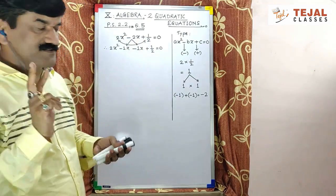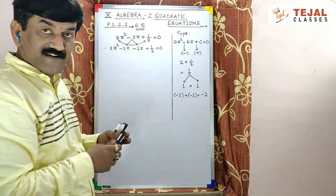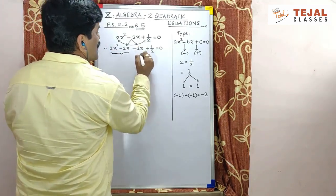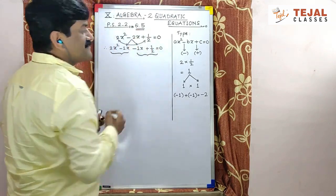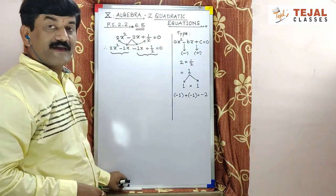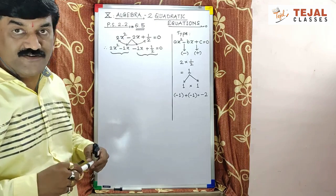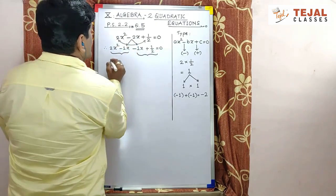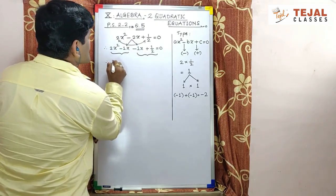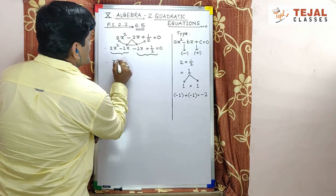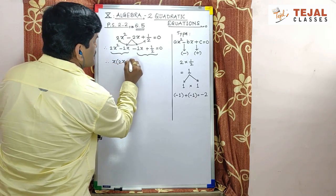Now prepare the couples. Jodi bana. Pehle 2 term ka jodi banega yaha pe, aur dusare 2 term ka jodi banega. Ab dekhe. Pehle 2 term ka jodi bane se kaun common aayega? Dekho, yaha pe. Only x will be the common element. You will get 2x minus 1.